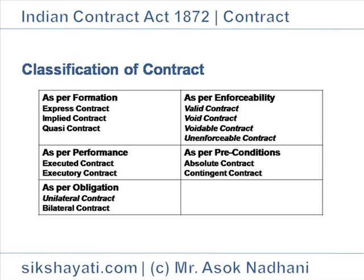Example: A agrees to sell a Maruti car to B at Rs. 1 lakh, and B pays the money immediately at the time of contract. This is a unilateral contract as only A has yet to fulfill his obligation, i.e., to deliver the car. Bilateral Contract: contracts in which both parties are yet to fulfill their obligations.